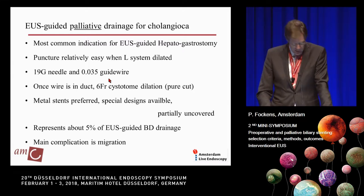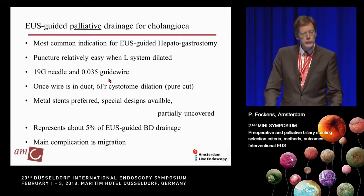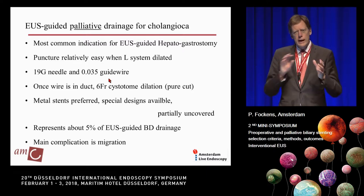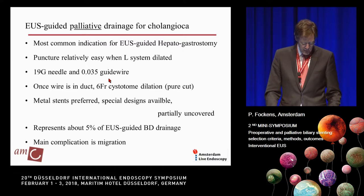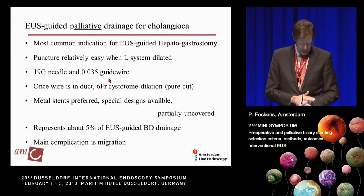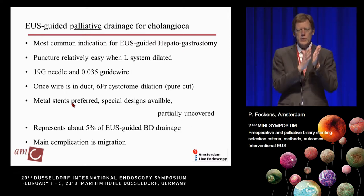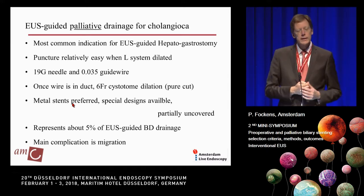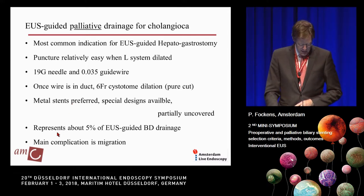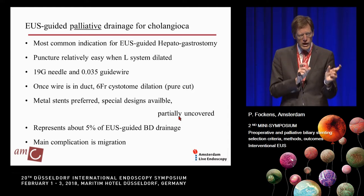For palliative drainage of cholangiocarcinoma, EUS works pretty well. That's probably the most common — or the only — indication for EUS-guided hepaticogastrostomy. The puncture is relatively easy, especially with a large dilated system, though the endoscope is quite loose in the stomach, making positioning challenging. Use a large needle with a standard 0.035-inch wire, and you need to dilate through the liver tract — a 6-French cystotome with pure cut is quite often used. Metal stents should always be used; if you use an uncovered or plastic stent, the liver and stomach are not attached, so you risk drainage leaking and peritonitis. Some stents are half-covered and half-uncovered, since uncovered portions inside the liver provide good anchoring.